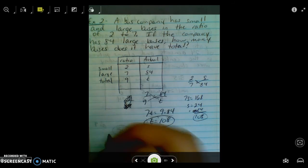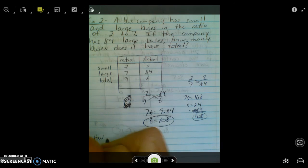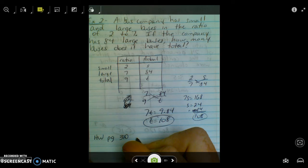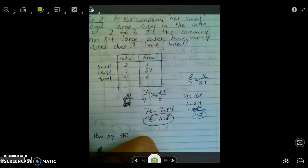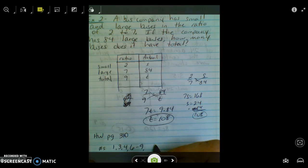So the homework for today is on page 310. We've got numbers 1, 3, 4, 6 through 9, 20, 27 through 29. All right.